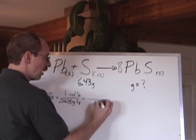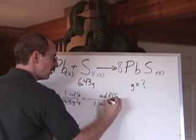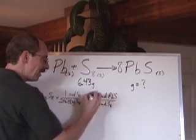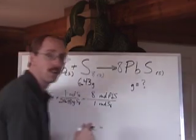Well, there's one mole of S8. We have how many moles of PbS in our balanced equation? Well, eight. So we'll end up multiplying this by eight and then dividing by this. But we're not done.